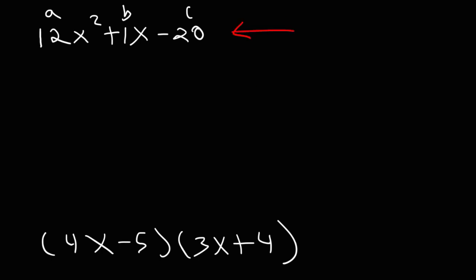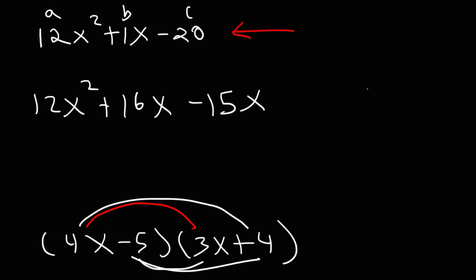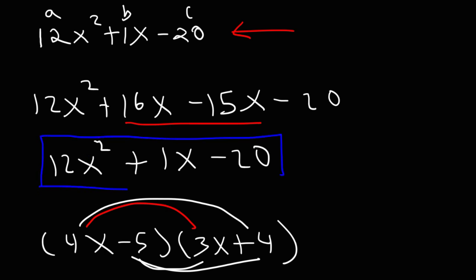And we could check it. We could check our answer by FOILing what we have. 4x times 3x is 12x squared. And then 4x times 4 is 16x. Negative 5 times 3x, that's negative 15x. Negative 5 times 4 is negative 20. So combining like terms, which we can combine those two, we have 12x squared. And then 16x minus 15x, that's plus 1x minus 20. So that's to show you that this technique does work.